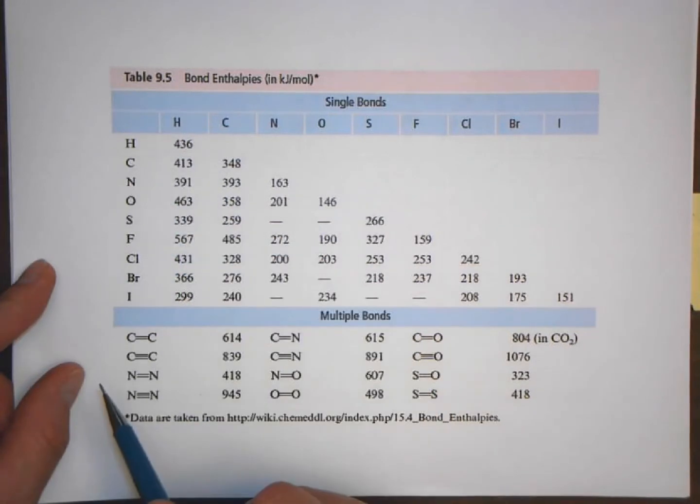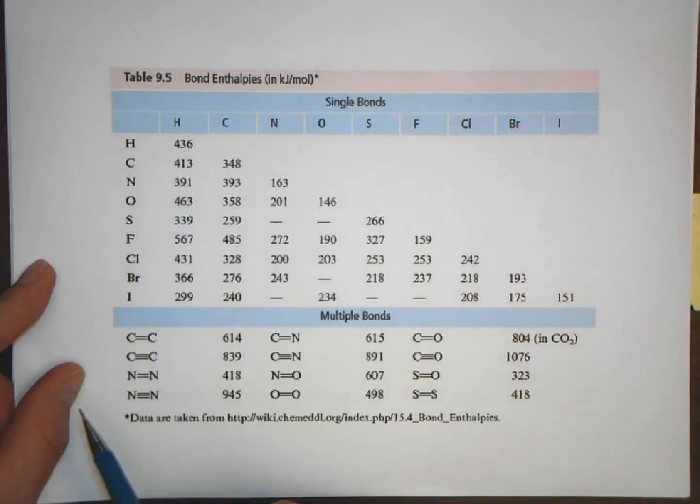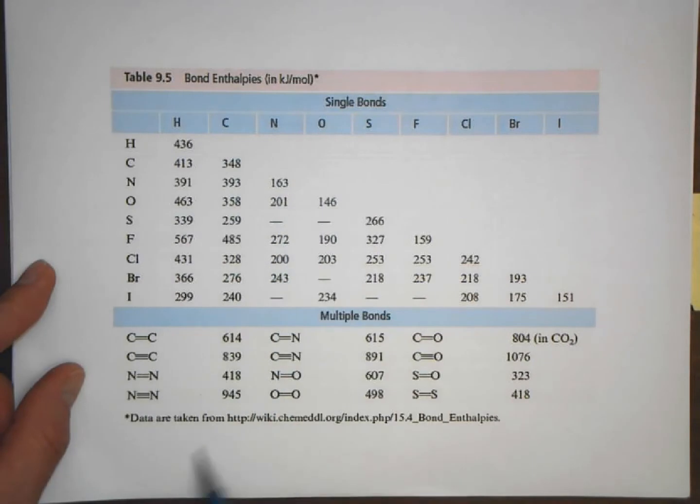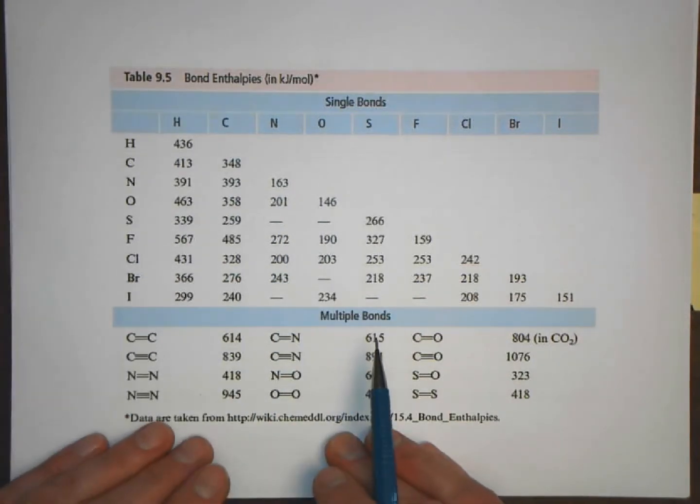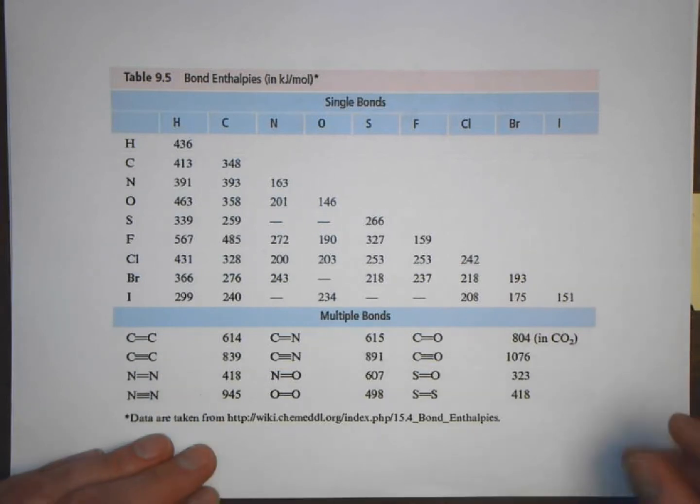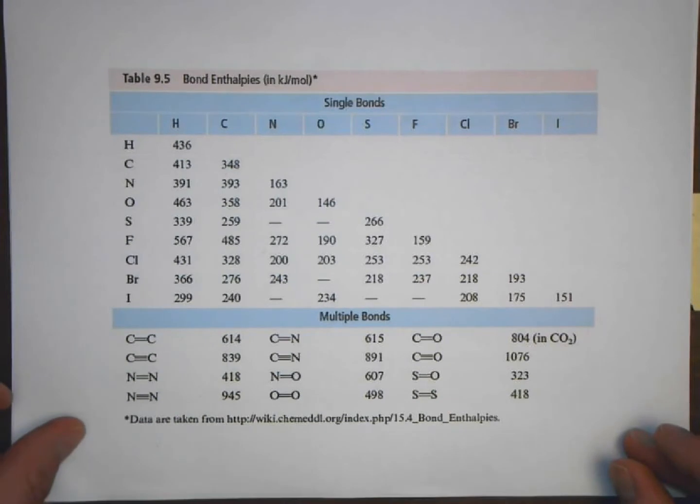This is the amount of energy it takes to break a hydrogen-hydrogen single bond, a carbon-hydrogen bond would be there and so on, a nitrogen-nitrogen single bond is there. One thing to keep in mind is a nitrogen-nitrogen triple bond is going to be stronger than a nitrogen-nitrogen double bond, and we see the same thing with carbon-carbon triple bond and carbon-carbon double bond.